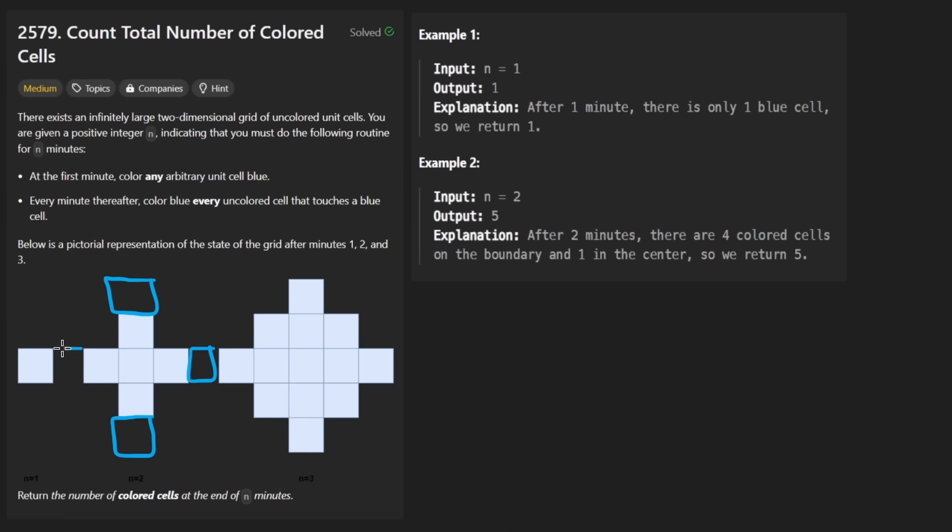and then also here, here, here, and here. So that's eight new squares we can add. And then we end up with this guy. So this is n equals three. So in terms of the total number of squares, we had one here, we had five here, and we had 13 here.